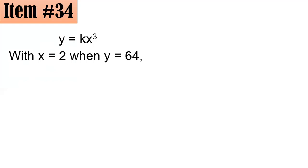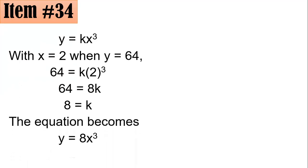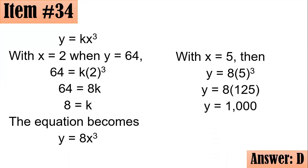Using the condition x equals 2 and y equals 64, substitute to solve for k: 64 equals k times 2 cubed, so 64 equals 8k, giving k equals 8. The equation becomes y equals 8x cubed. With x equals 5: y equals 8 times 5 cubed equals 8 times 125 equals 1000. The answer is letter D.